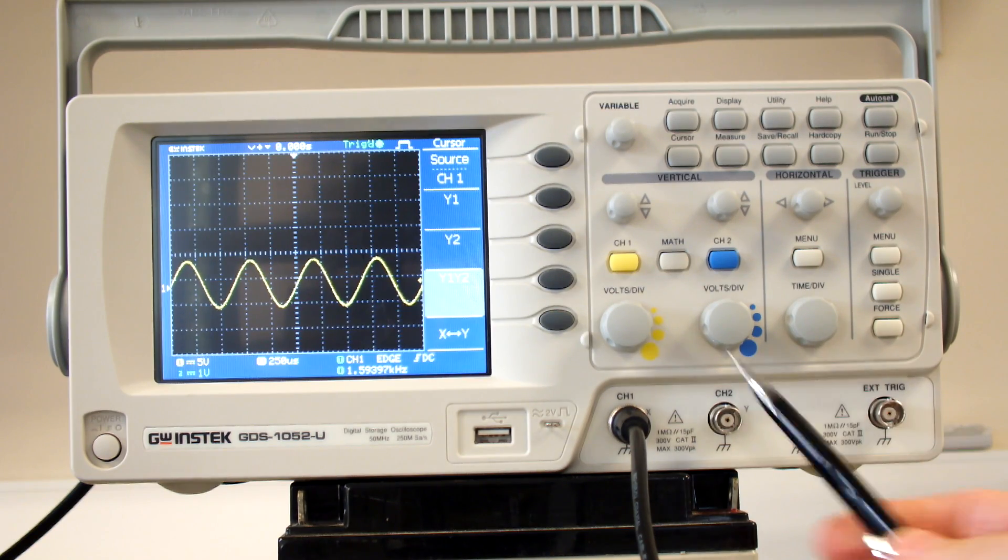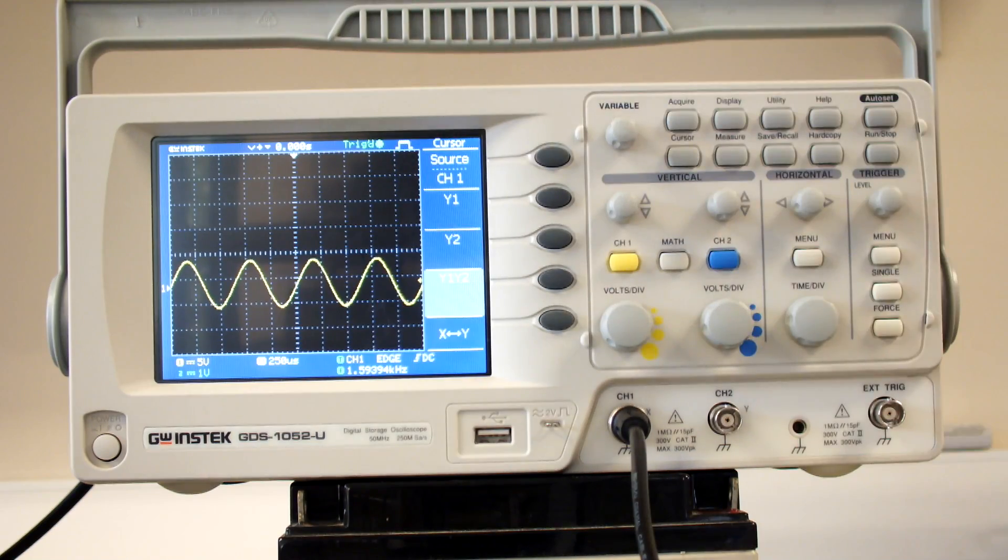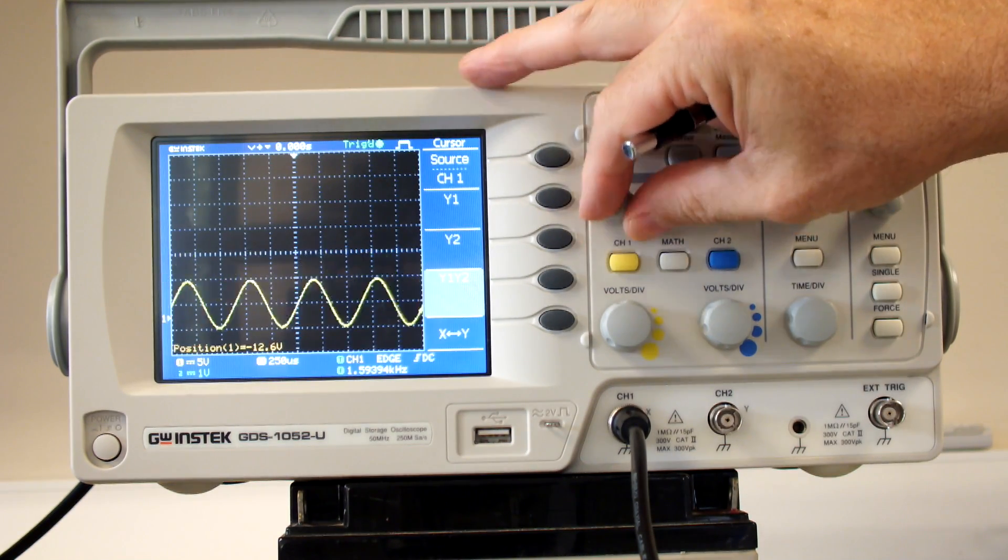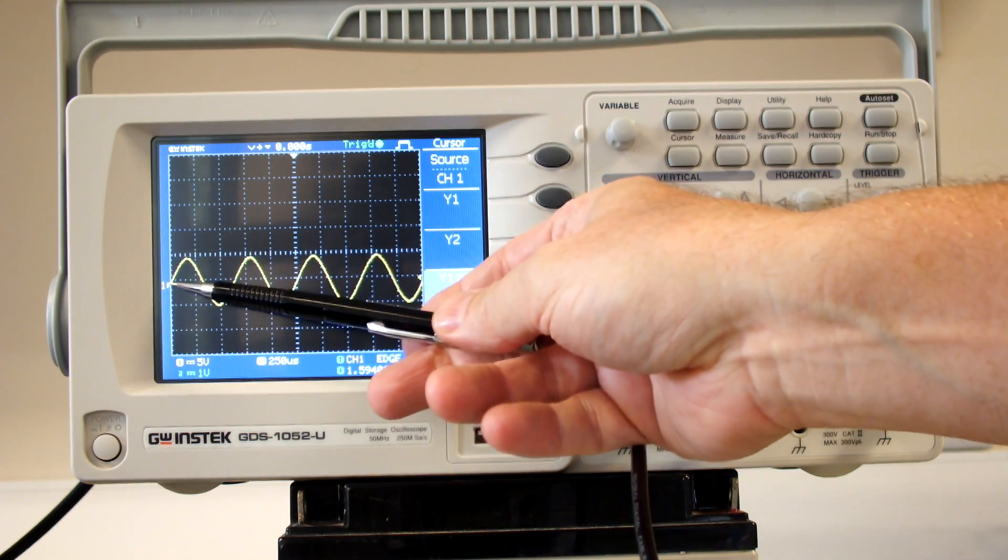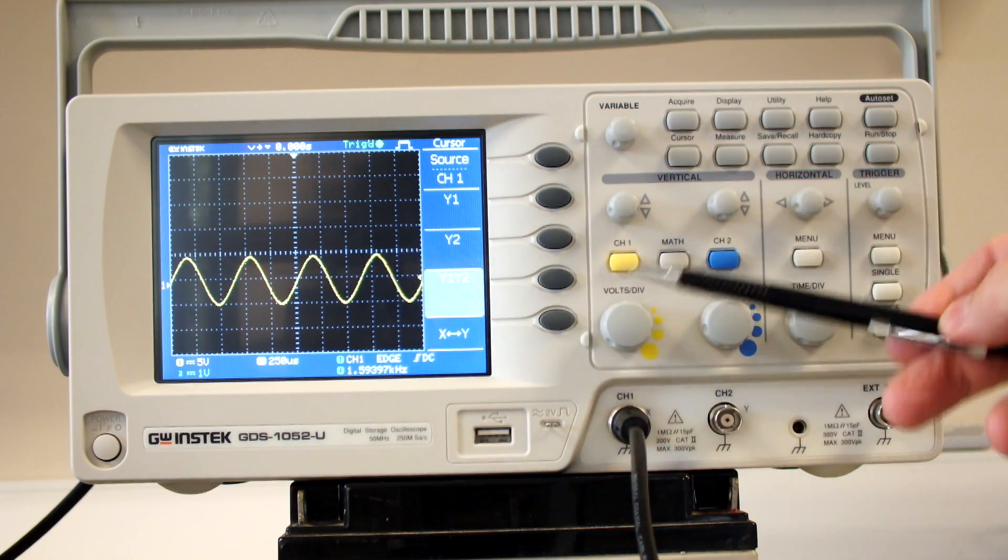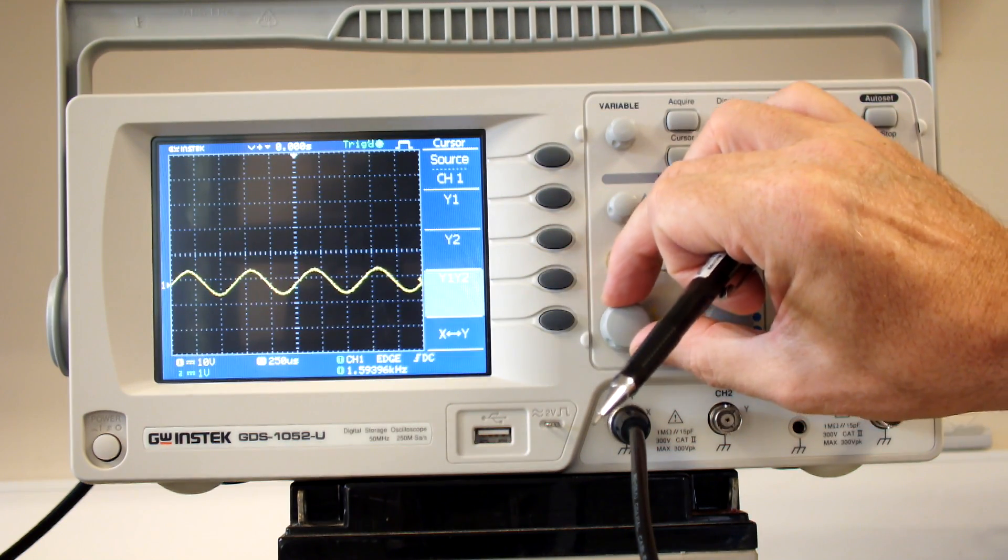Here we have the oscilloscope connected with the waveform coming in on channel 1, and we want to adjust the display. We can move this up and down. This adjustment sets the zero position for the trace, and this one sets the volts per division.